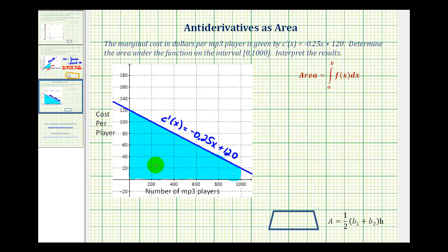So we want to determine the area of this shaded region. And notice how this region forms a trapezoid. So we can use this formula here to determine the area. You can think of this as a trapezoid turned on its side.